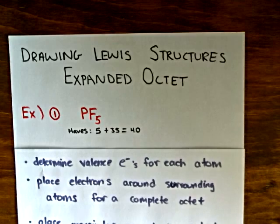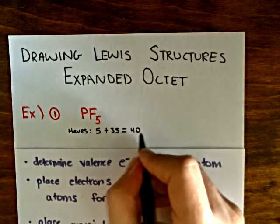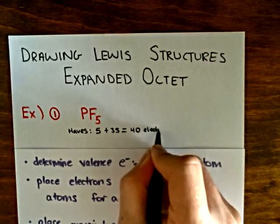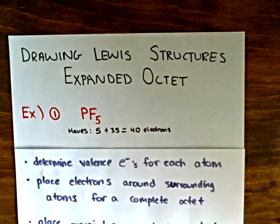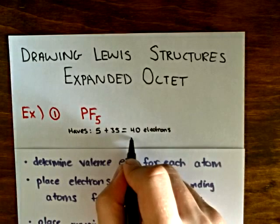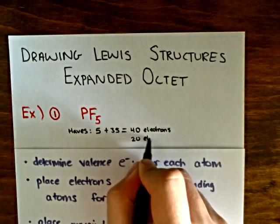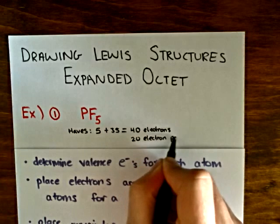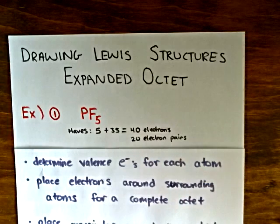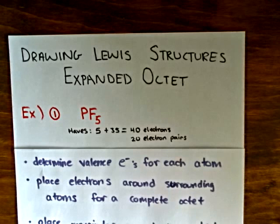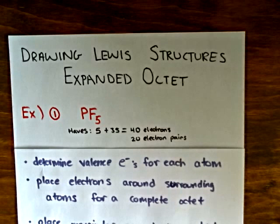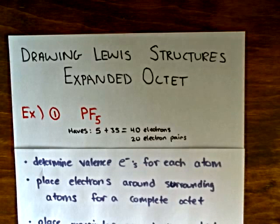Now, instead of writing this as 40 electrons, I write this as 20 electron pairs. You don't have to do this, but I find it easier when it comes time to draw in the electrons around each atom and also when writing in the bonds. One electron pair has two electrons.